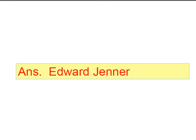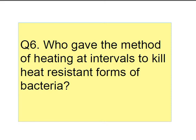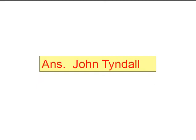Question number six: who gave the method of heating at intervals to kill heat-resistant forms of bacteria? Answer: John Tyndall. He gave the technique Tyndallization, which is intermittent heating. The resistant forms are also called spores.